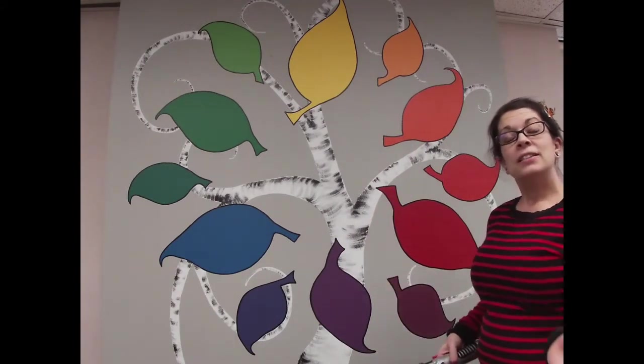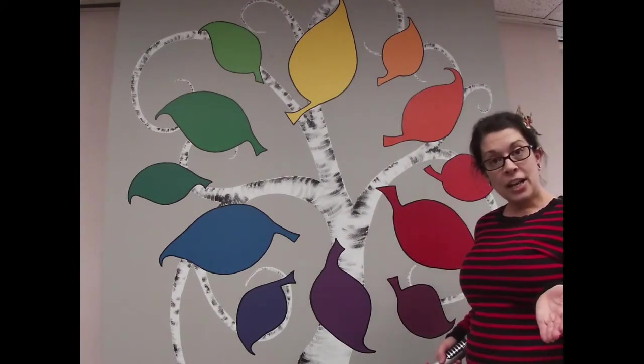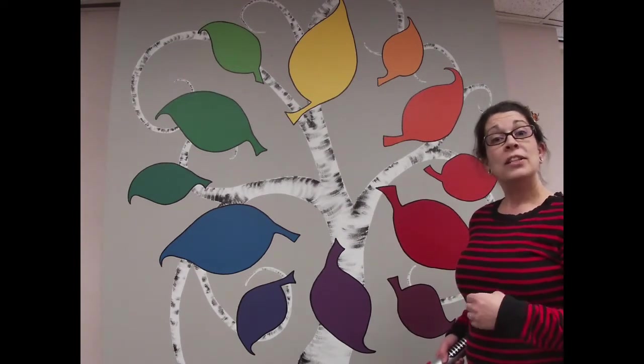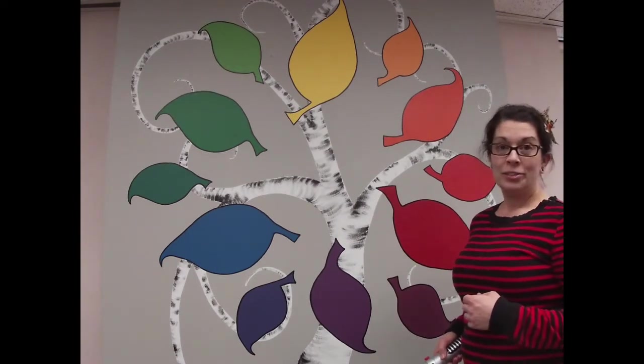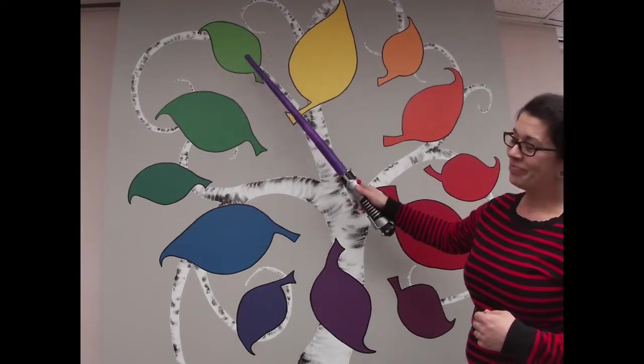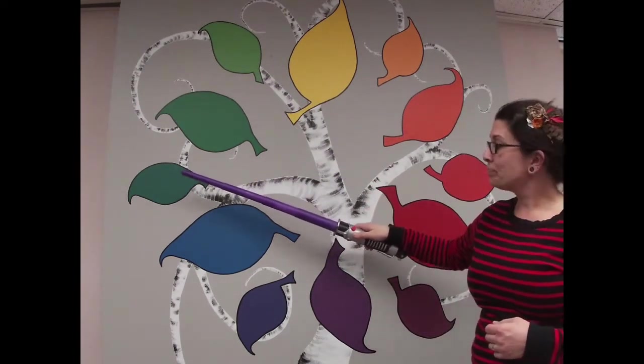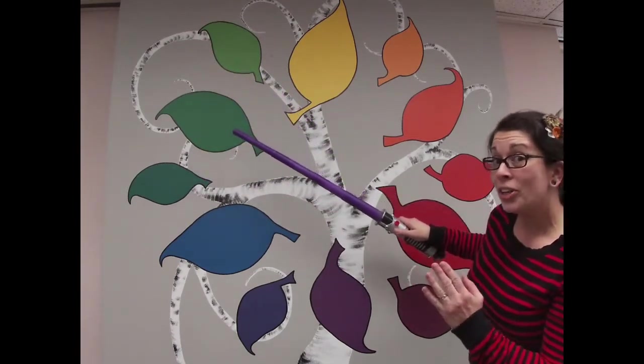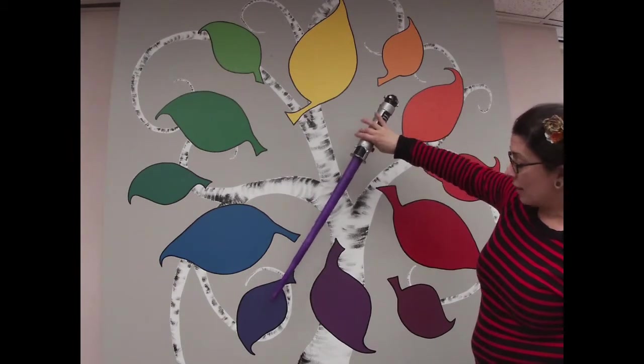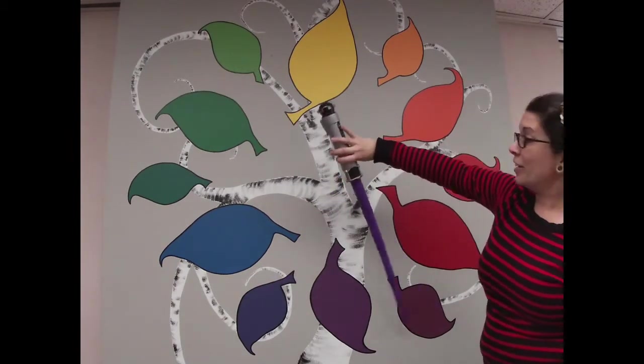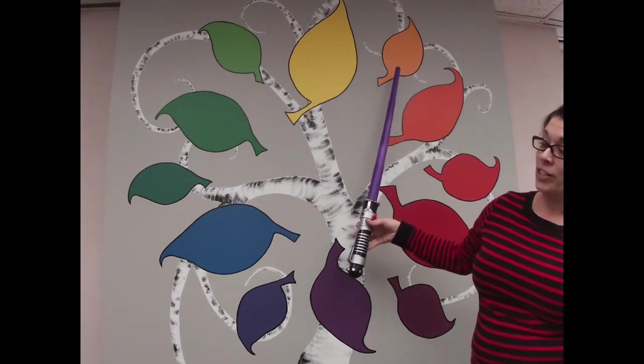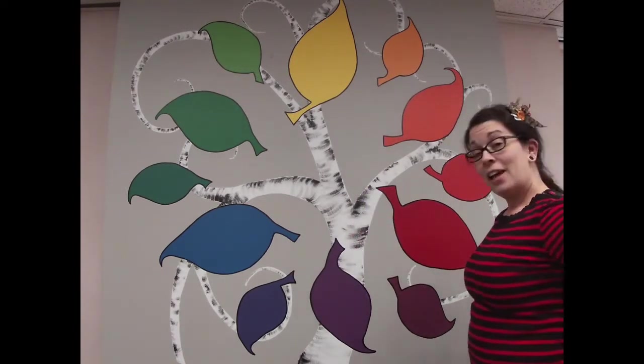Then if you mix one primary and one secondary, you get the intermediate colors. Another word for them is tertiary colors. They are yellow green, blue green. Notice the primary color is always said first. Blue violet, red violet, red orange, and finally yellow orange. That's our color wheel.